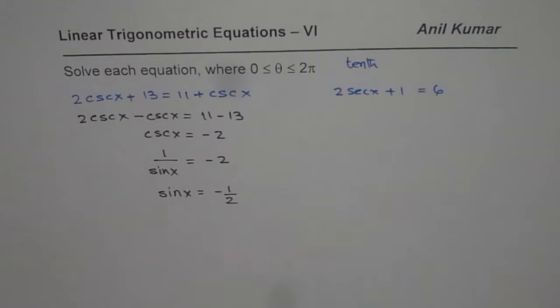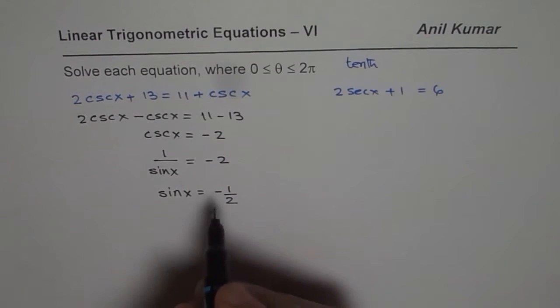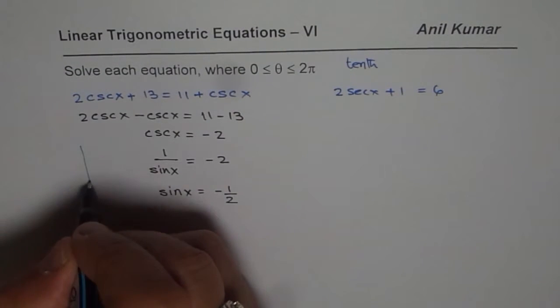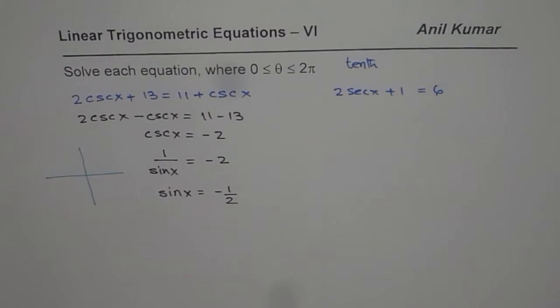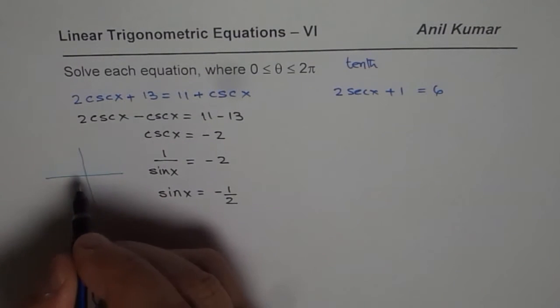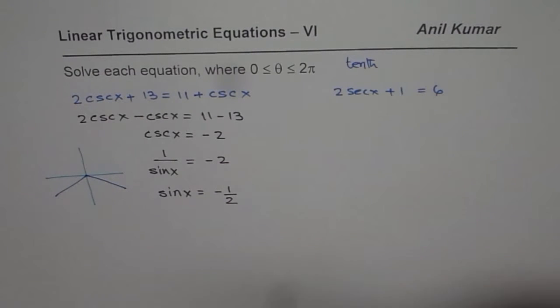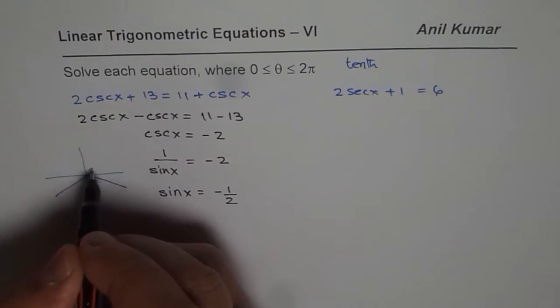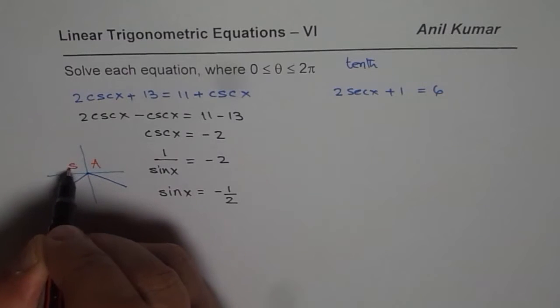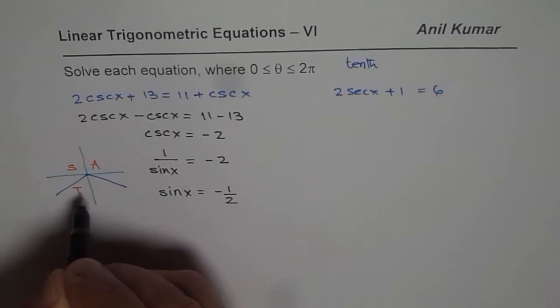Since we are expecting a negative answer, we are looking into two possibilities. One will be in quadrant 3, the other one in quadrant 4. Simple reason that sine is positive in quadrants 1 and 2, but it is negative in 3 and 4.